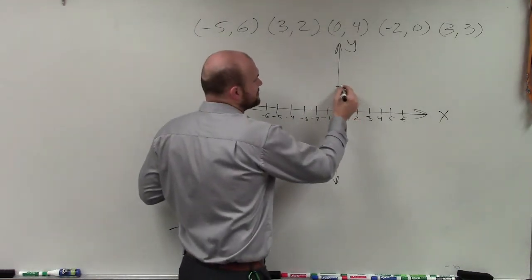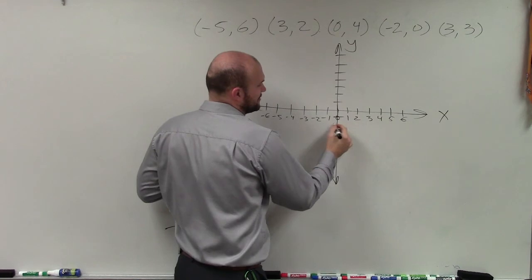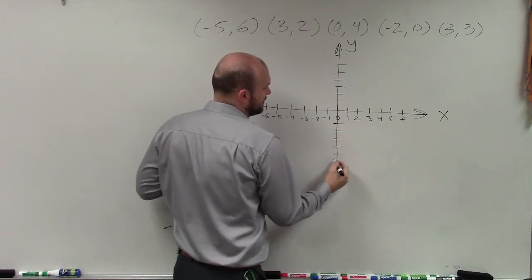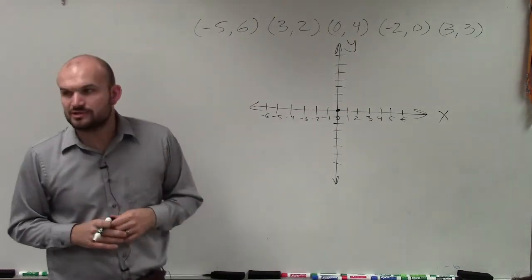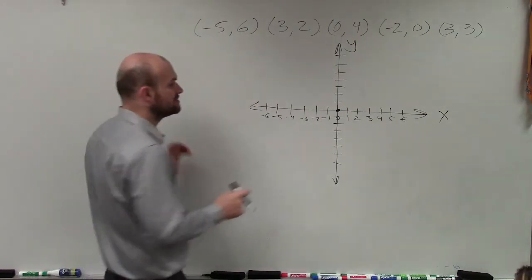So the values going up are positive, and the values going down are going to be negative. And just note that where they intersect is going to be what we call the origin, or the point 0, 0.